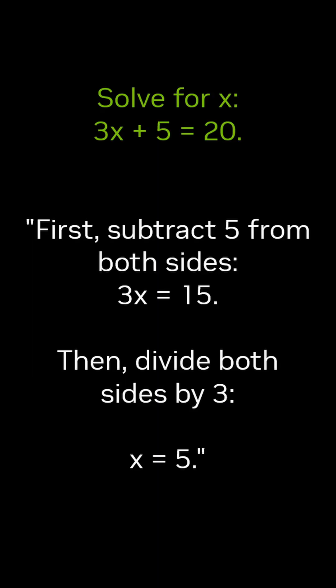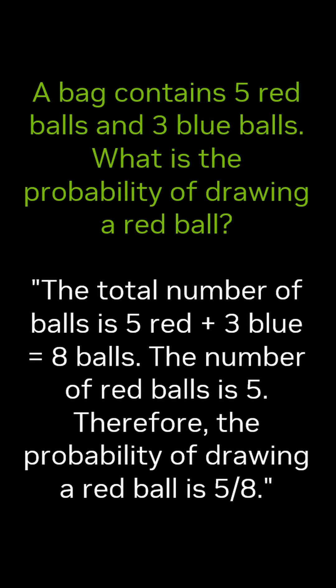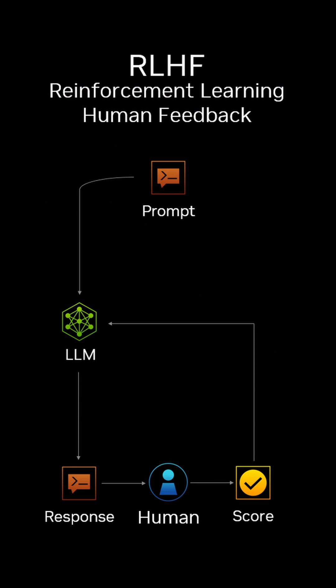Reasoning models are post-trained on datasets that emphasize problem solving, for example, math and logic puzzles. They also use reinforcement learning, which is an iterative technique that requires an enormous amount of computations. Reinforcement learning lets the model self-learn.